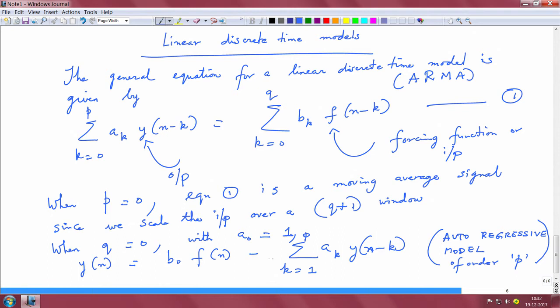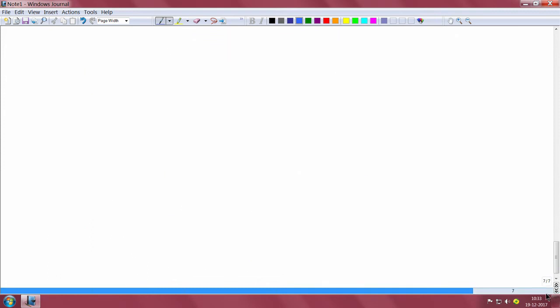It is an auto-regressive model because this signal y(n) self expresses itself, and therefore it is called an auto-regressive model. These models can be expressed in the form of a signal flow graph that all of us are familiar with from undergraduate signals and systems. Let us try to realize the system as a signal flow graph.